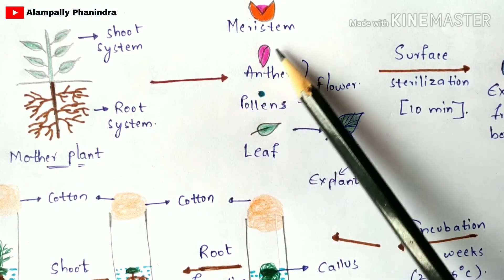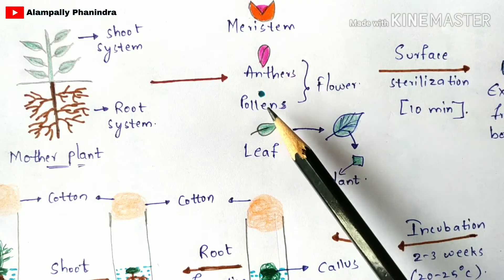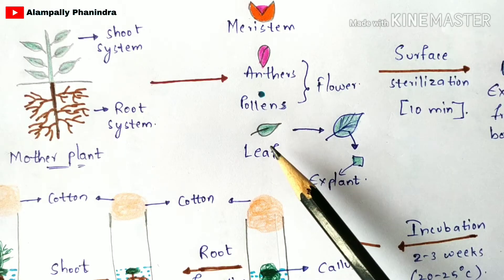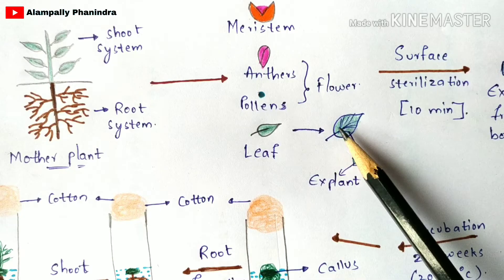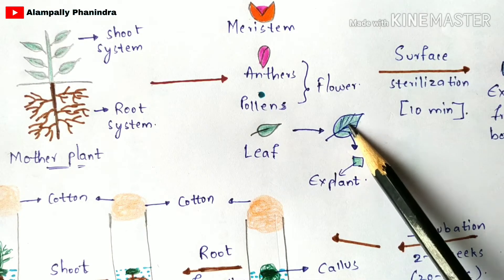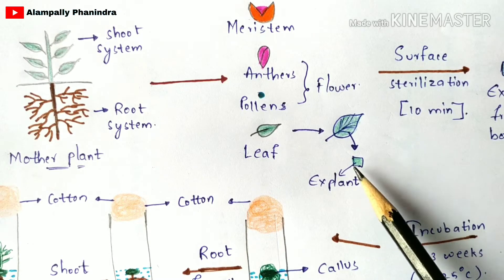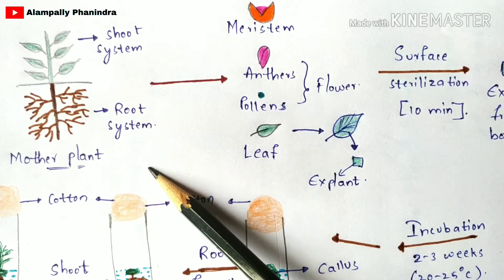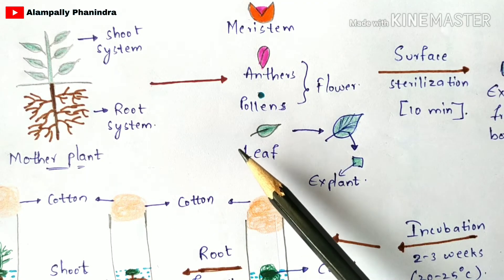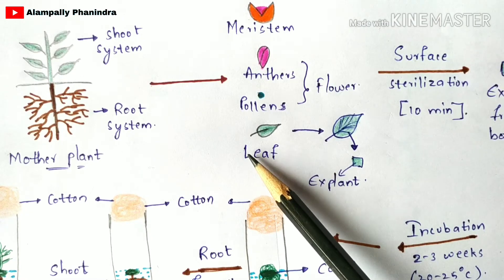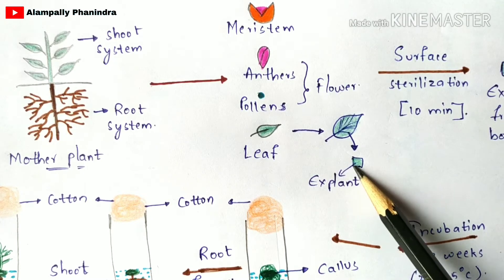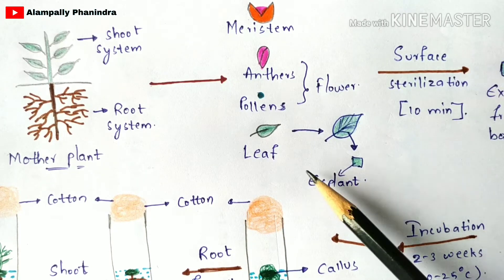From the mother plant, you cut a part such as meristem, anthers, pollens, or a leaf. In most cases, a leaf is used. A single bit of the leaf is cut out, and that cut piece is called an explant. In simple words, an explant is a part of a mother plant — a small piece isolated from an organ of the mother plant.